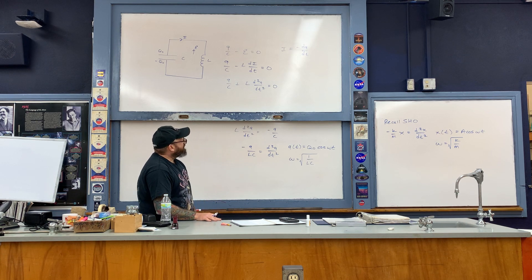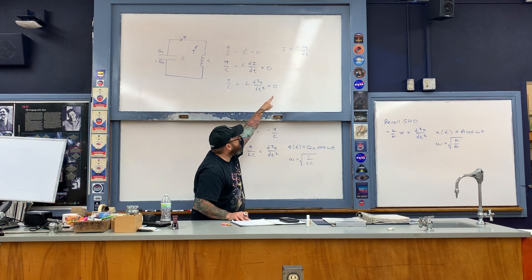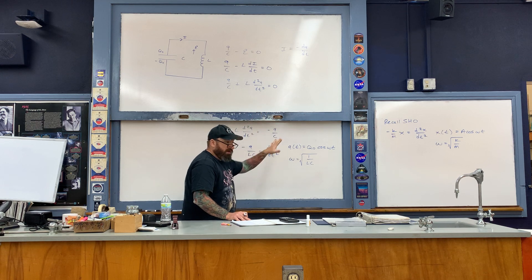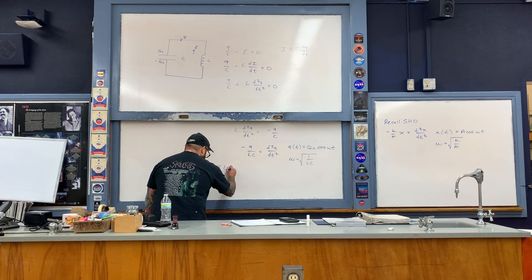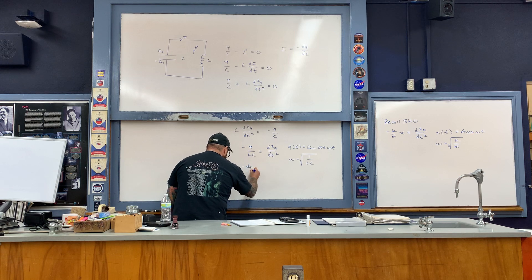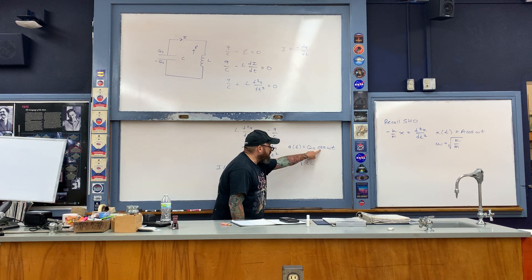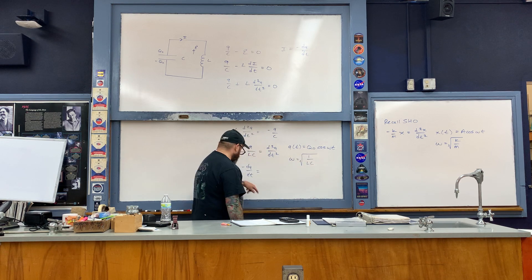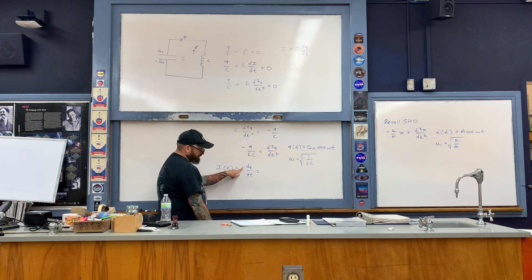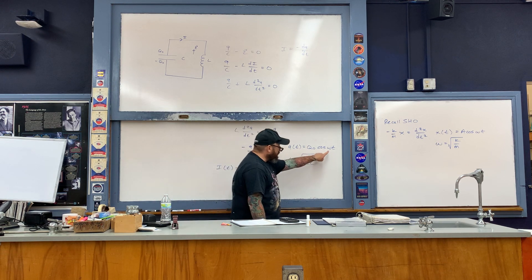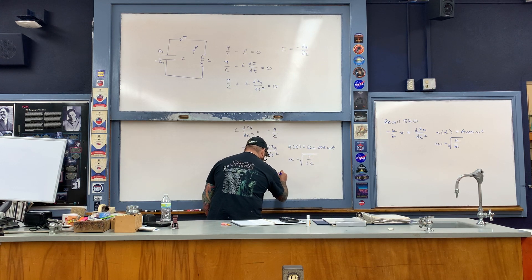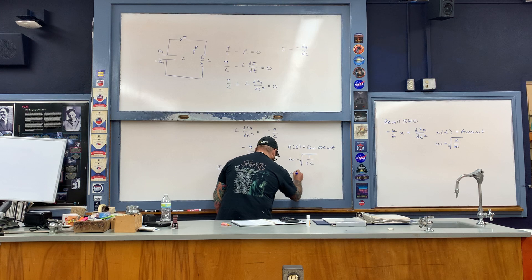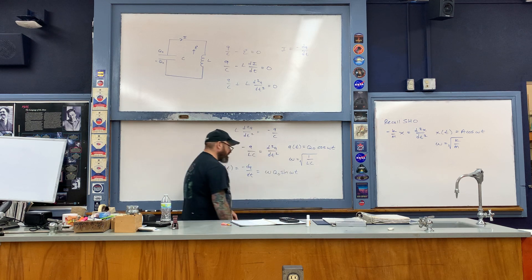Now we find the current as a function of time by taking the negative derivative: i(t) = -dq/dt. Differentiating Q₀·cos(ωt), the derivative of cosine gives a negative sine; that negative cancels with the leading negative sign. Using the chain rule, an ω comes to the front, giving i(t) = ω·Q₀·sin(ωt).